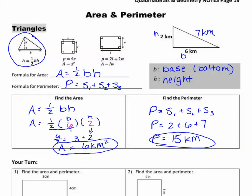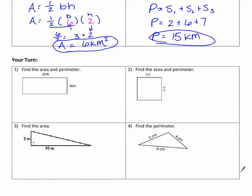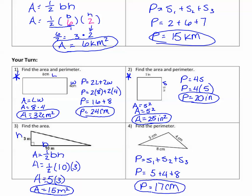Now I want you to solve the four problems at the bottom. If you need to rewind the video to review the rectangle, square, or triangle, go ahead. Remember for numbers 1 and 2, you're finding both the area and the perimeter, so you'll need two answers for each. Pause now and unpause when ready to check. Here are your answers to the four problems. For number 2, you can use either the square perimeter formula or 2L plus 2W — both give you 20. If you have questions, see your teacher or re-watch the video.